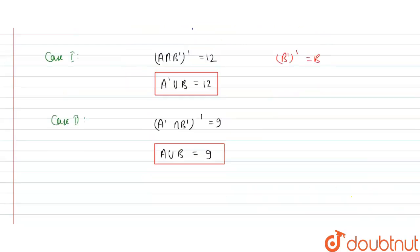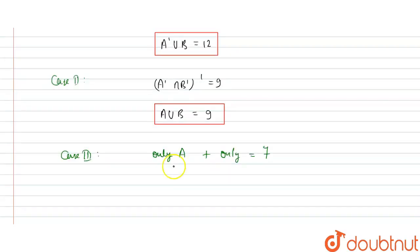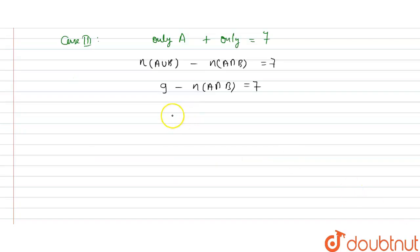In Case 3, only A plus only B equals 7. We can write only A plus only B as N(A union B) minus N(A intersection B). Since A union B equals 9, we get 9 minus N(A intersection B) equals 7, so N(A intersection B) equals 2. This is our third case.